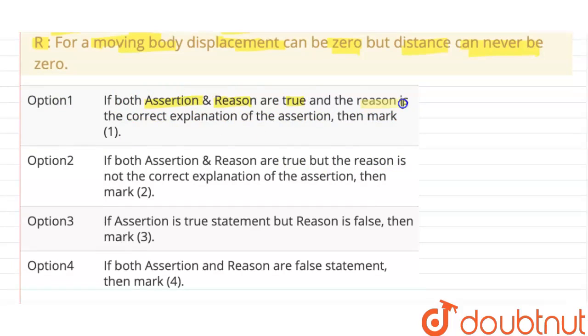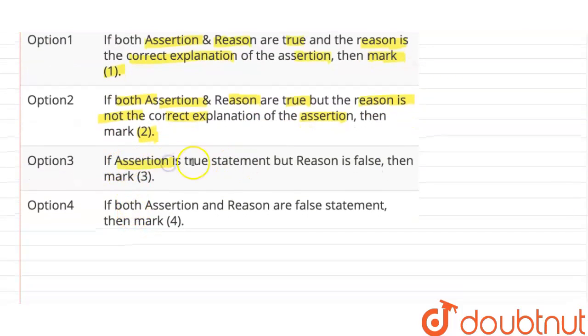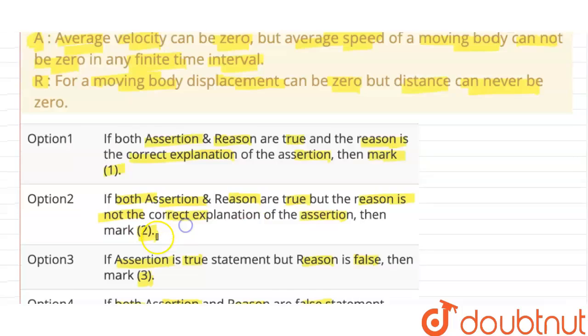Option 1: If both assertion and reason are true and the reason is correct explanation of assertion, then mark 1. Option 2: If both assertion and reason are true but reason is not the correct explanation of assertion, then mark 2. Option 3: If assertion is true statement but reason is false, then mark 3. Option 4: If both assertion and reason are false statement, then mark 4.